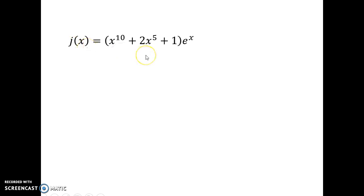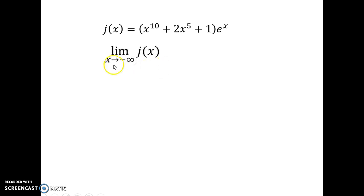Okay, here's another function. It's not a rational function. We've got some multiplication here, but we have a polynomial on the left, an exponential function on the right. See, the function is in the exponent, so it's an exponential function. All right, so we take this function, we want to go to negative infinity. What's going to happen?